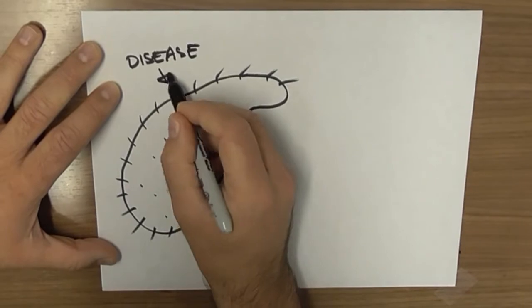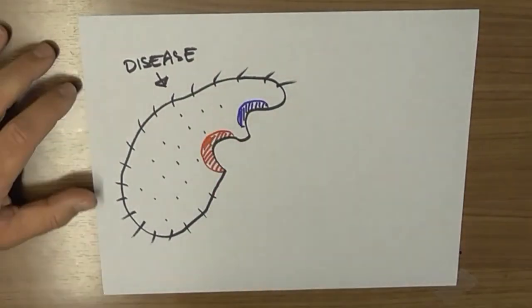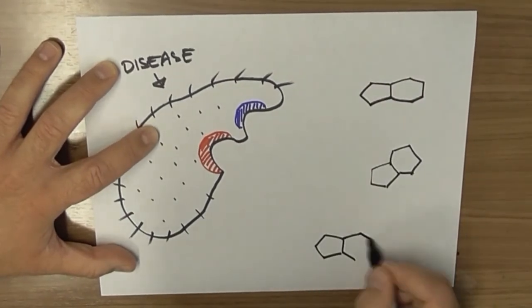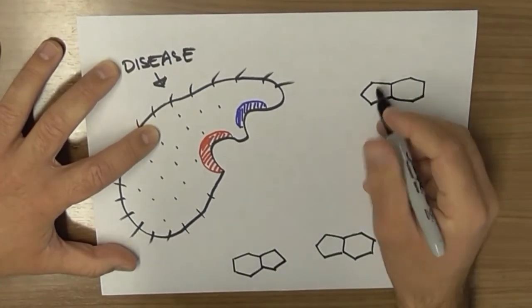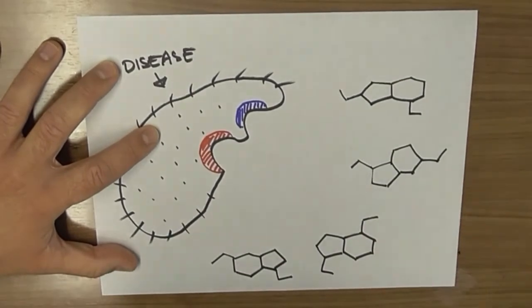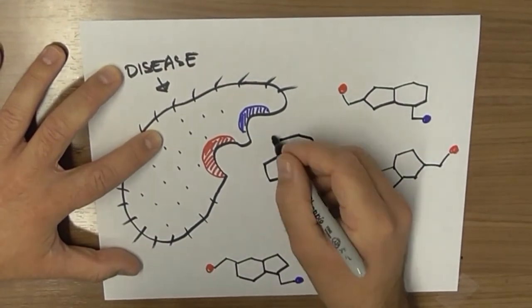The difference between drugs treating different diseases can be just the addition or subtraction of a few atoms, and like in real estate, in pharmaceuticals the location of these atoms is everything.